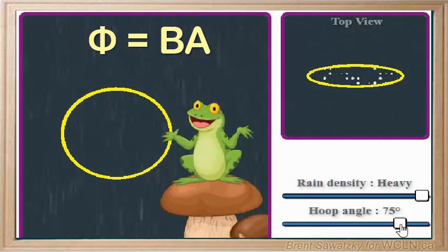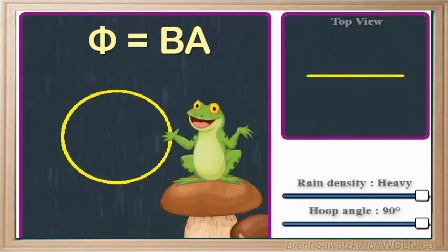If we rotated it even more to 90 degrees from the horizontal, we can see that the effective area drops down to zero. Again, the magnetic field hasn't changed, the size of the loop hasn't changed, but now the amount of rain passing through the loop has definitely changed. It's now zero. The flux is zero.